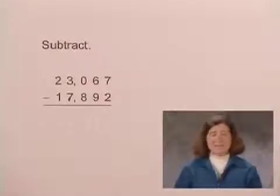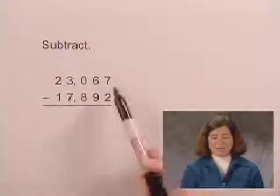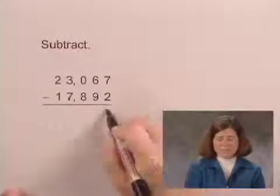We'll first subtract the 1s, then the 10s, then the 100s, then the 1000s, and then the 10,000s. Beginning, we subtract the 1s. 7 minus 2 is 5.